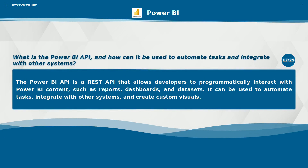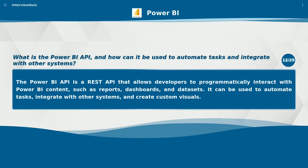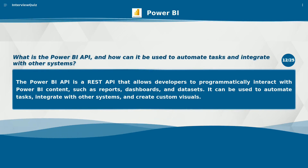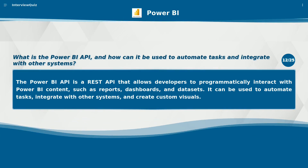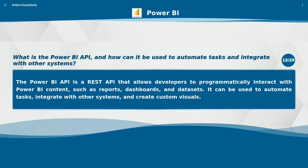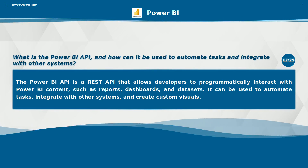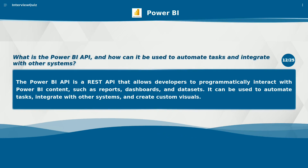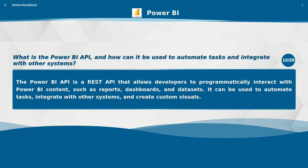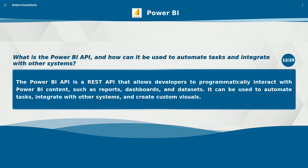What is the Power BI API, and how can it be used to automate tasks and integrate with other systems? The Power BI API is a REST API that allows developers to programmatically interact with Power BI content, such as reports, dashboards, and datasets. It can be used to automate tasks, integrate with other systems, and create custom visuals.